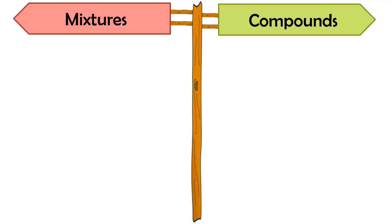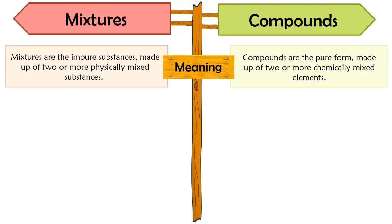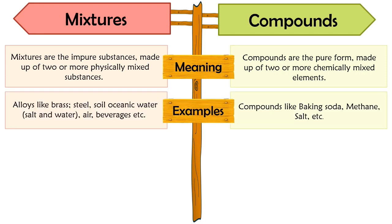Now let us discuss some differences between mixtures and compounds. Meaning: mixtures are impure substances formed due to the physical mixing of two or more components. On the other hand, compounds are pure substances formed due to chemical interaction between elements at the molecular level. Common examples of mixtures are soil, beverages, alloys, oceanic water, air, etc., whereas baking soda, methane, water, common salt, etc. are examples of compounds.